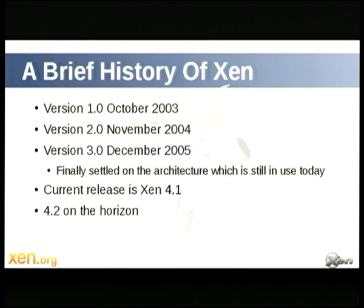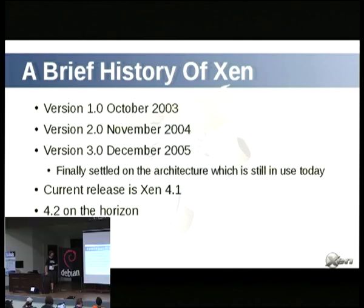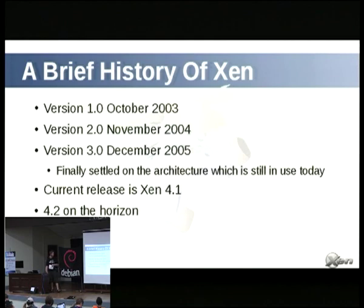It was spun out into a separate project. Version 1.0 was in late 2003. It went fairly quickly to 2.0, a major re-architecting, and then another major re-architecting. We had version 3 towards the end of 2005, and that's the architecture we still use today. We've gone past 4.0, but the compatibility and architecture remain the same. Currently we're at Xen 4.1, and we're currently frozen for 4.2.